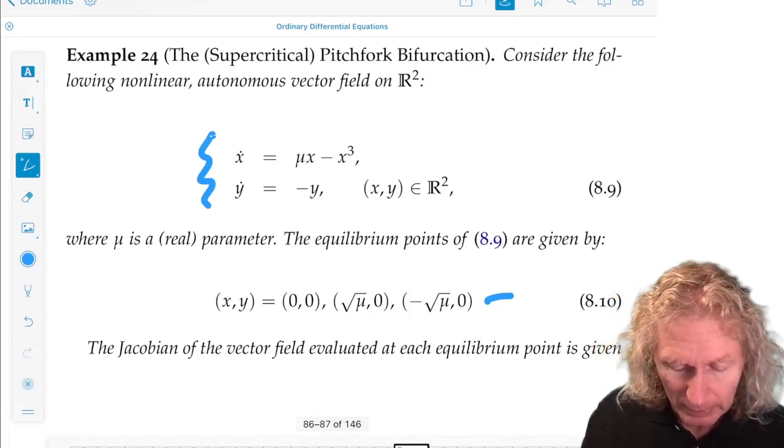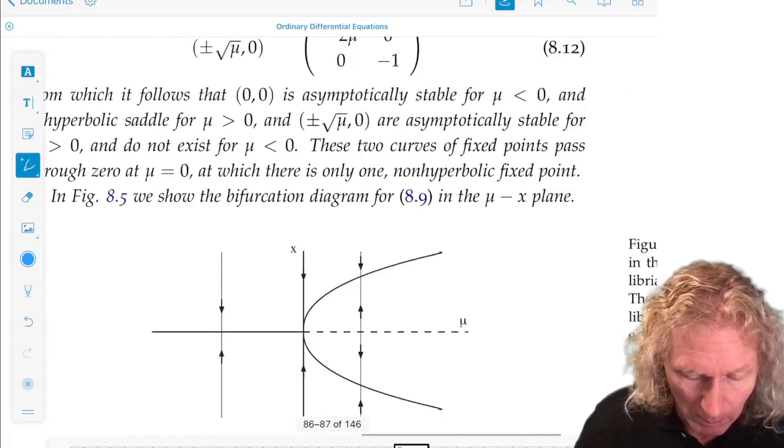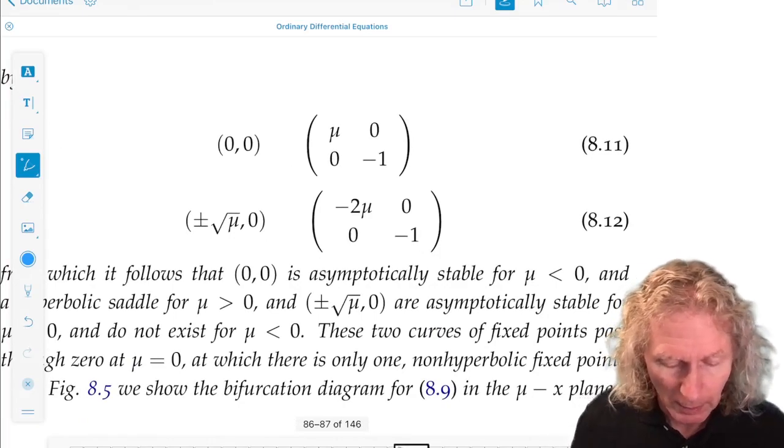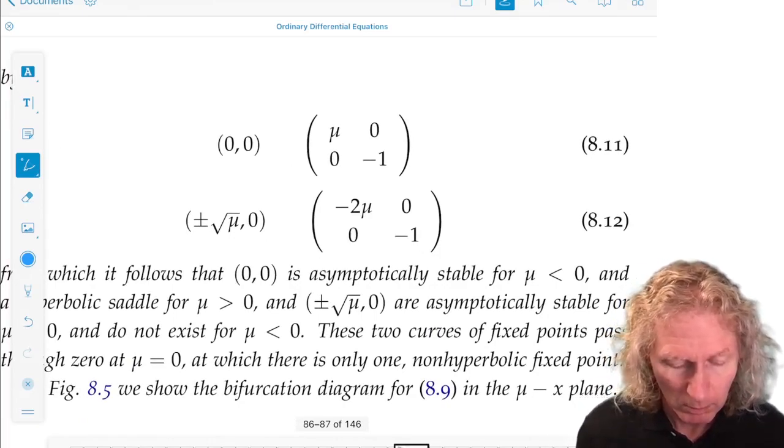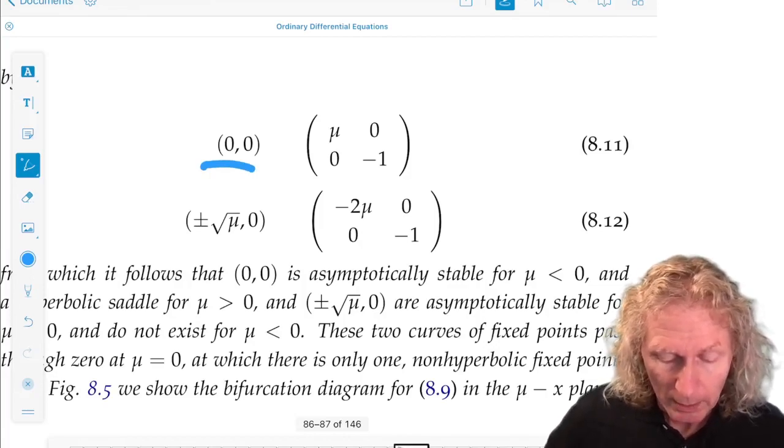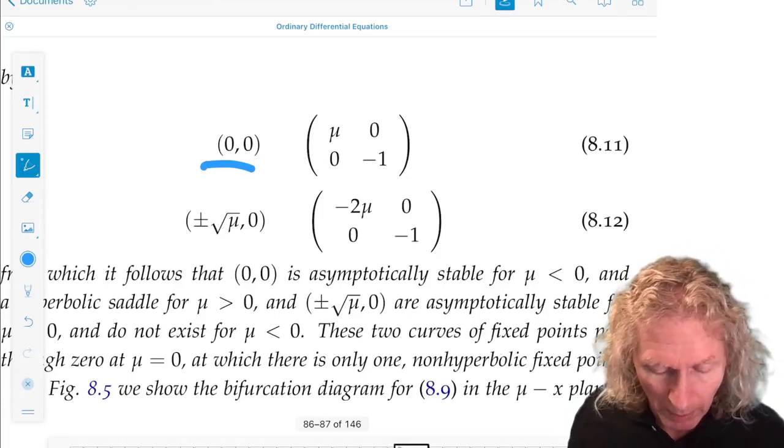So we can look at the linearized stability by considering the Jacobian. And we see that the origin is stable, asymptotically stable, for μ negative, and unstable, or a saddle point, for μ positive.